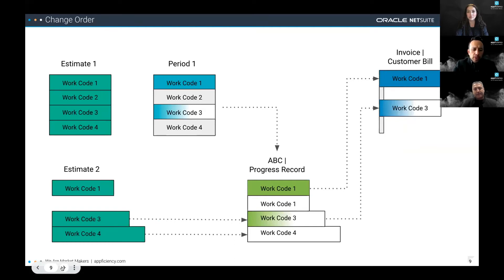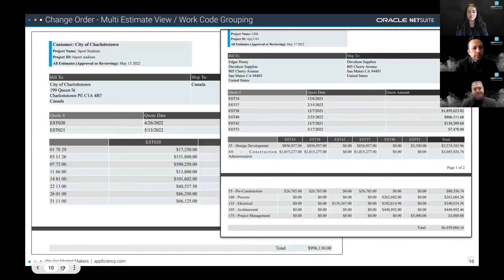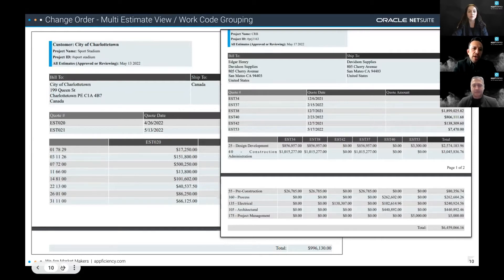For those not familiar with how work codes interact with change orders: a change order feeds into the mini-project estimate and then flows into the general overall progress to the billing record, and ultimately to customer billing. Having a platform that can present the information in multiple ways — by cost codes or work codes, at divisional code level, in landscape or portrait orientation — depending on how many change orders you expect to deal with on each project — provides a very valuable foundation.